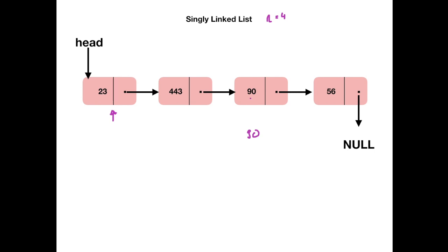In search of 90, we start with 23, move to 443, and then we move to this third node where we find the value, so we end the search here. So three comparisons required.